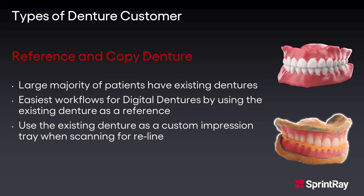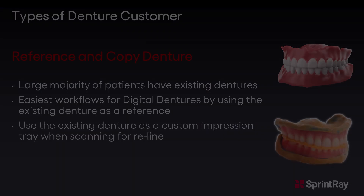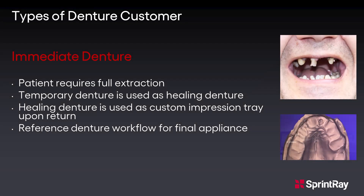There are four main types of denture customer. Reference and copy denture customers will be arriving at the office with an existing denture, where we will be using the existing denture as a custom impression tray or scanning an exact copy of the denture to print a duplicate. For an immediate denture, a patient will be arriving with partial dentition requiring full extraction. A temporary healing denture will then be printed, which will then be used as a reference denture for the final appliance later.